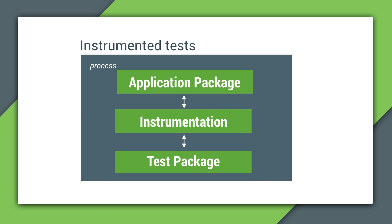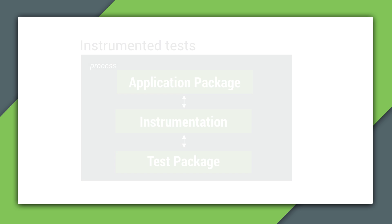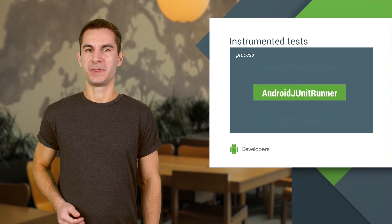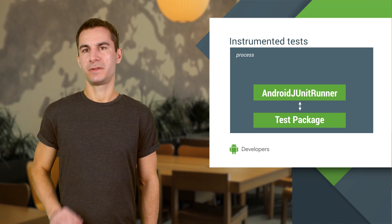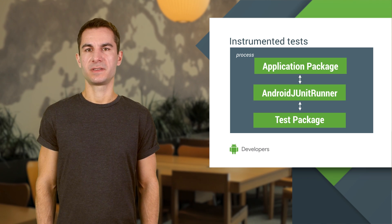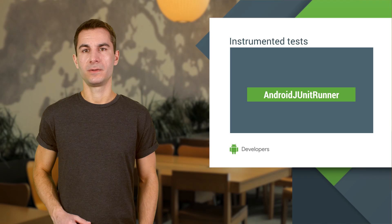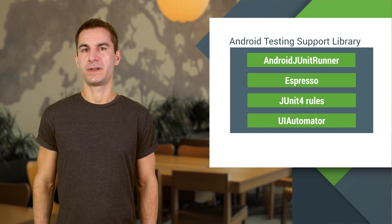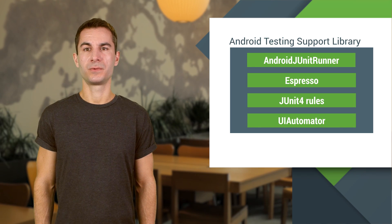How does that work? Well, the tests that you write will be packaged into a separate APK and installed as part of the connected Android test Gradle task, or when running tests in Android Studio. They will then be executed in your app's process by an instrumentation runner. We provide a runner implementation that is compatible with JUnit4 tests as part of the Android testing support library, or ATSL. To use it, make sure you have the newest version of Android support repository installed within your SDK.